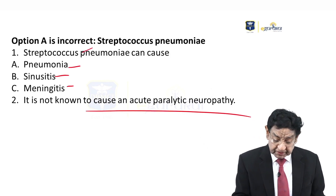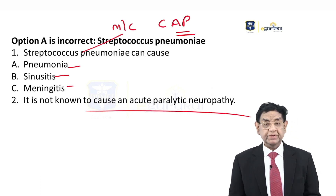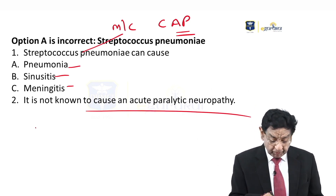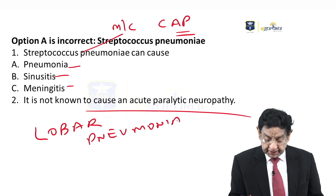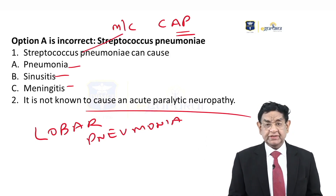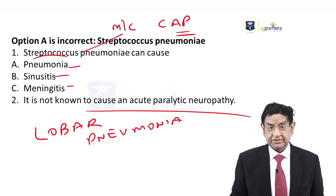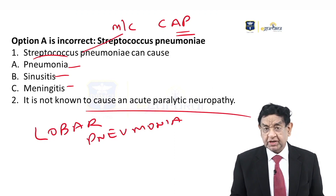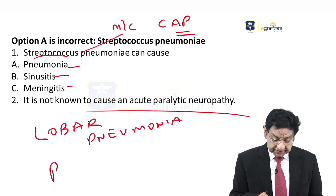Streptococcal pneumonia is the most common cause of community-acquired pneumonia. It can lead to a type of lobar pneumonia. I have a question for you: what is the colour of sputum in this case of pneumonia due to Streptococcal? The answer is rust-coloured sputum.